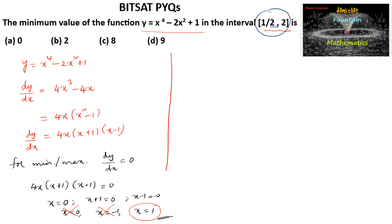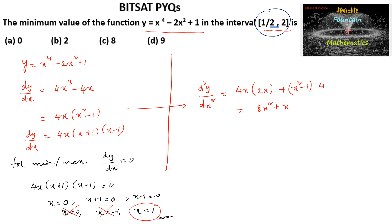Let us check whether at x = 1 the function gives a minimum or maximum using the second derivative test. d²y/dx² = 4x · 2x + (x² - 1) · 4 = 8x² + 4x² - 4 = 12x² - 4.